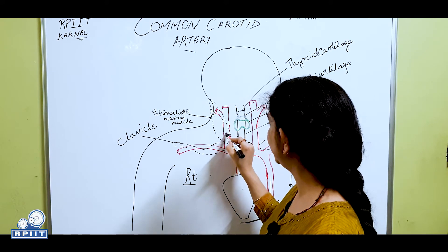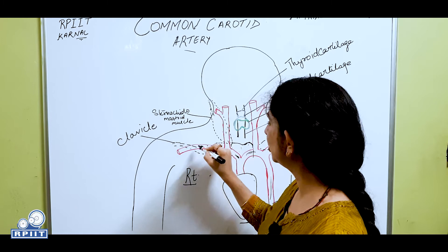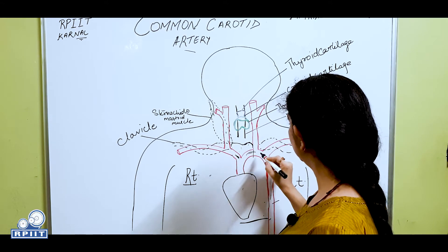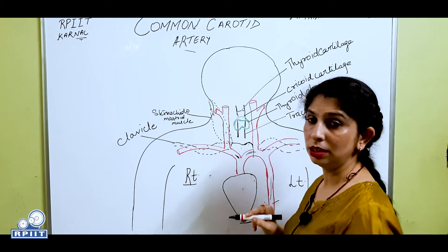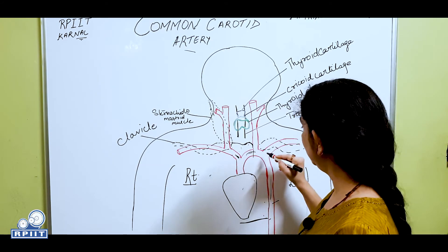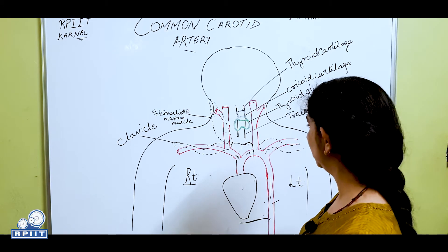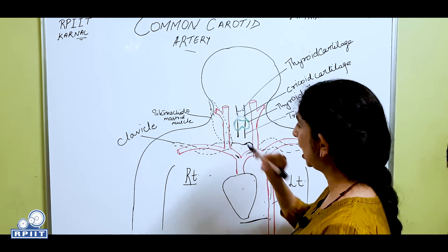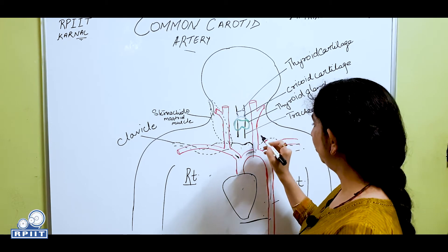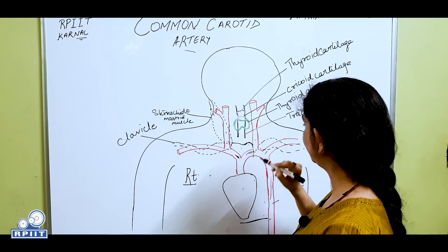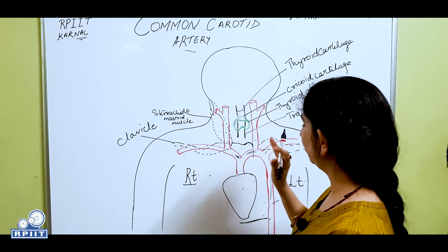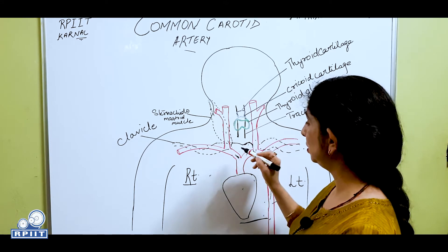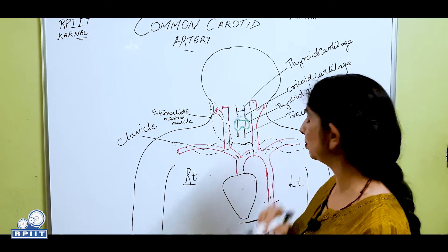The other branch is the common carotid artery — today's topic. This is the right common carotid artery and this is the right subclavian artery, which is later named the brachial artery. On the left side, there is no brachiocephalic trunk; the left common carotid artery and left subclavian artery arise directly from the arch of aorta. So on the right side we have the brachiocephalic trunk giving rise to both arteries, while on the left side they arise directly. Both common carotid arteries have different origins.